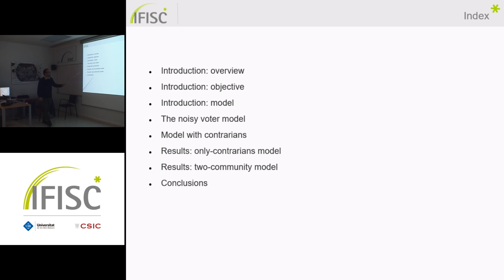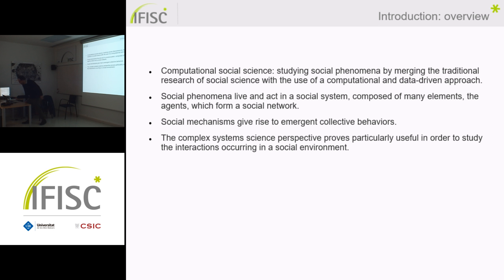As a study index of our work, we're going to start with a brief overview related to computational social science, which is the field of study where this voter model has been studied historically. Then we're going to present the objective of the present work and the model we have studied — the noisy voter model — then include the contrarian agents, and then present the results and conclusion.